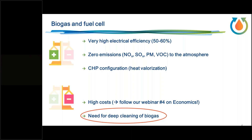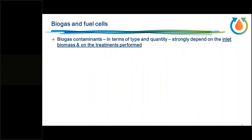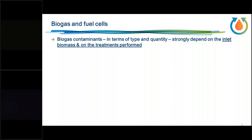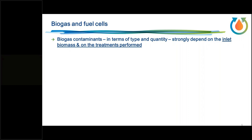The type and quantity of biogas contaminants depend strongly on the typology of the starting biomass — the feedstock — and also on the treatment performed in the production line. For example, in Torino it is possible to use additives like iron chloride in the water line, which has the secondary effect of partially separating sulfur.